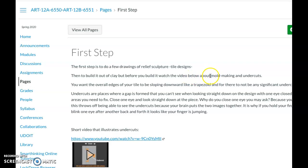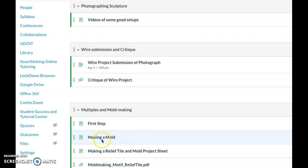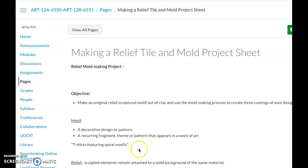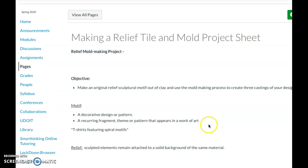This is the project sheet. You're going to be making an original relief sculpture, which is like a tile out of clay, and then using mold making to create one to two castings. I actually need to edit that because I don't think you have enough plaster for three.